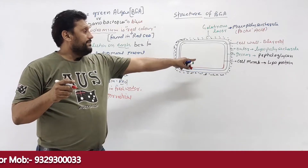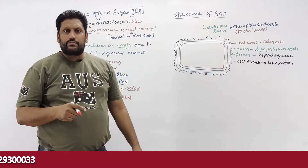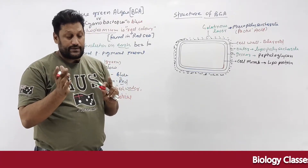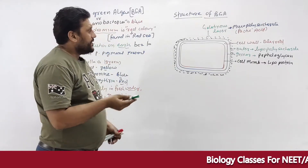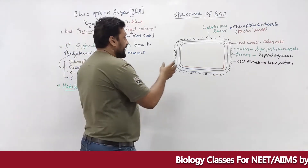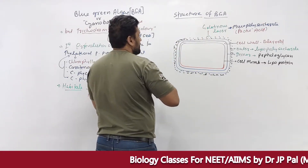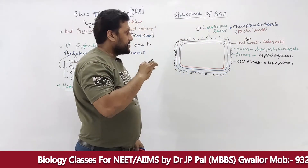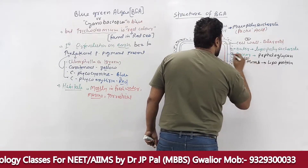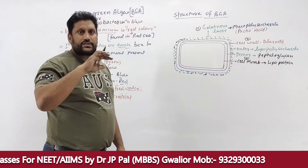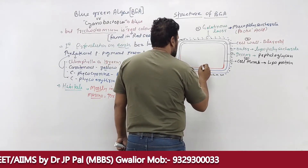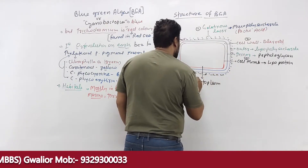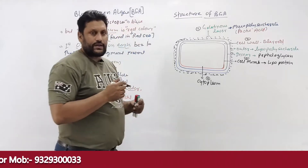To summarize BGA structure: first is the gelatinous sheath; second is the cell wall; third is the cell membrane; and fourth is the cytoplasm. Inside the cytoplasm, the first structure found is the thylakoid.